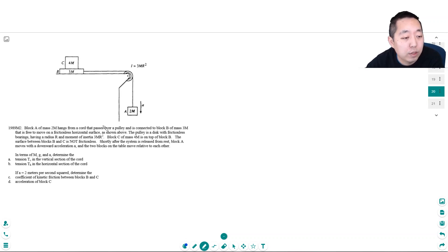The pulley is a disk with frictionless bearings having radius r and moment of inertia 3mr squared. That's the same as rotational inertia. Block C of mass 4m is on top of block B. The surface between blocks B and C is not frictionless. Shortly after the system is released from rest, block A moves with a downward acceleration A, and the two blocks on the table move relative to each other.